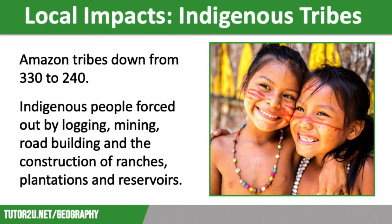In the Amazon rainforest, indigenous tribes have declined in number from 330 to 240 tribes. This is because logging, the construction of roads, the creation of ranches, plantations and reservoirs, and the opening of mines have all forced them off their land. Many displaced indigenous people have ended up in towns and cities, where life is difficult to adjust to, as the way of life and environment is so different from what they are used to.